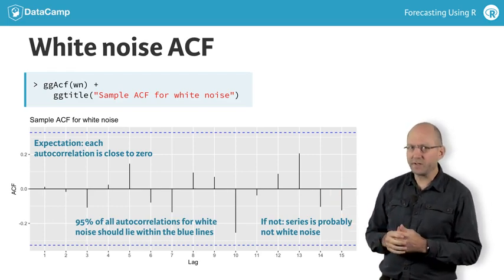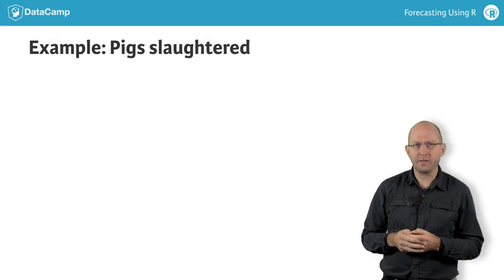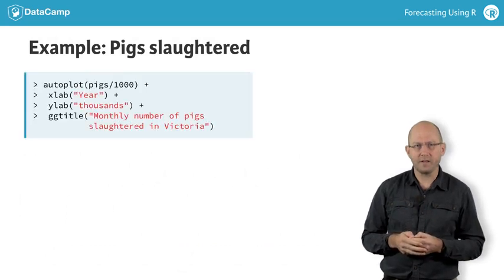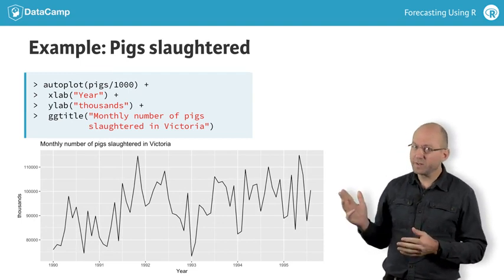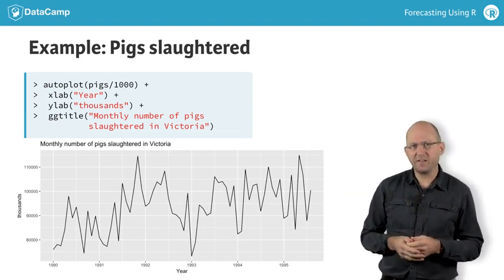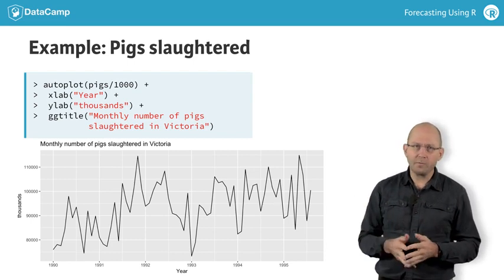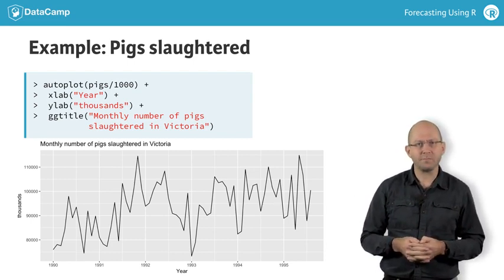Here is a time series showing the number of pigs slaughtered each month in my home state of Victoria. At first glance, it looks relatively random. Possibly there is a slight upward trend, but it is hard to see the difference between this and a white noise series on the basis of a time plot.